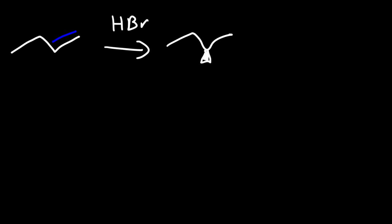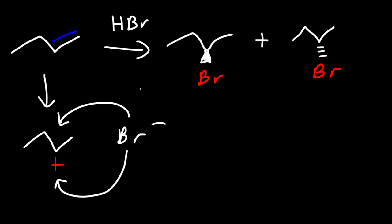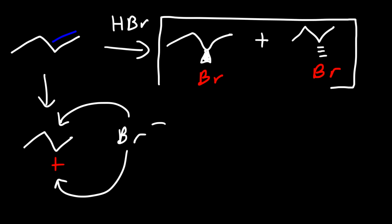Now let's talk about the stereochemistry of this reaction. We're going to get 2 products as opposed to 1. The bromine atom can be in the front or in the back — so it could be on the wedge, coming out of the page, or on a dash, going into the page. Once we get the secondary carbocation, we have an empty p orbital, and the bromide ion can attack from the front or from the back, leading to the two different products. If your product has a new chiral center, it's an indication that you could have a racemic mixture of products.